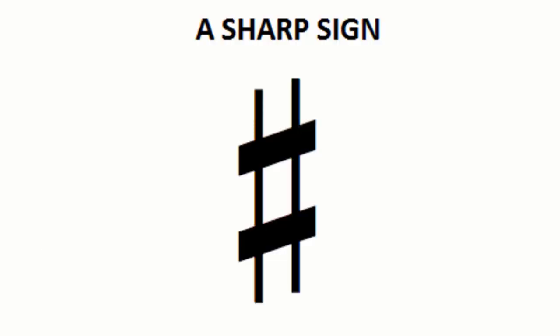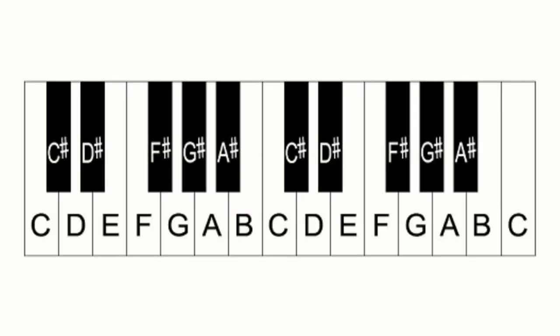Sharps. A sharp sign means to play a note that is a half step or semitone higher. For instance, C sharp means to play the note that is a half step higher than C. On piano, you simply play the key that is to the immediate right of C.